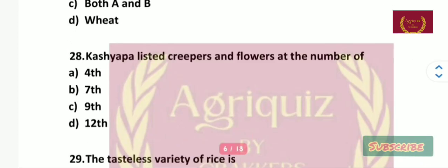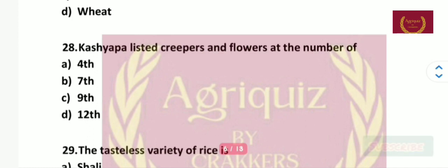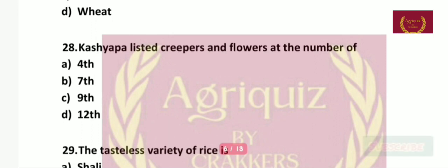Question number 28: Kashyap listed creepers and flowers at number — 7th, 9th, or 12th? The right answer is fourth.